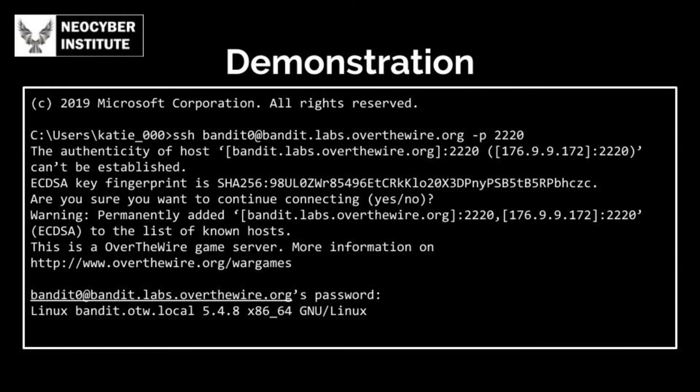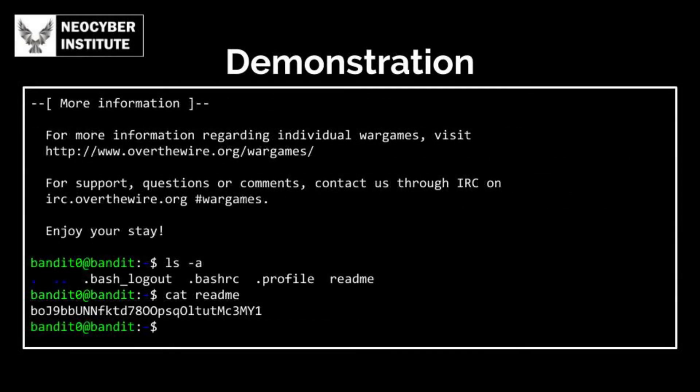You'll then be prompted for a password. This is the password of the actual user on the other server or machine. If you enter the correct one, you're now officially logged in as that other user remotely. After you're connected, you can do anything on that computer that the user you logged in as can do from the terminal or command prompt. One thing to note is that if you've connected to a Linux machine, you can only run Linux commands, and if you've connected to a Windows machine, you can only use Windows commands — even if the computer you're presently sitting in front of is Windows.